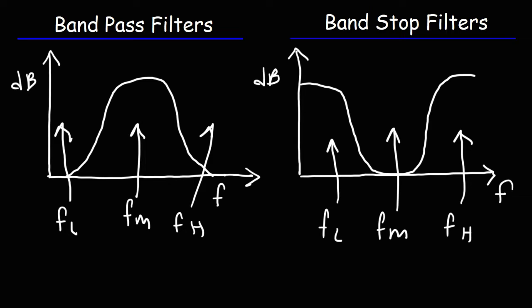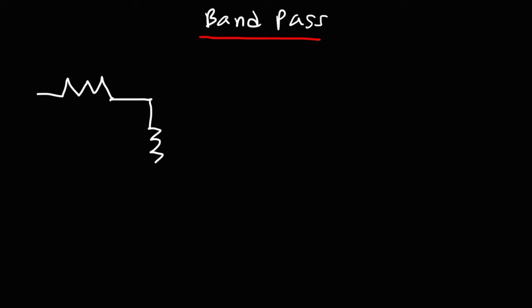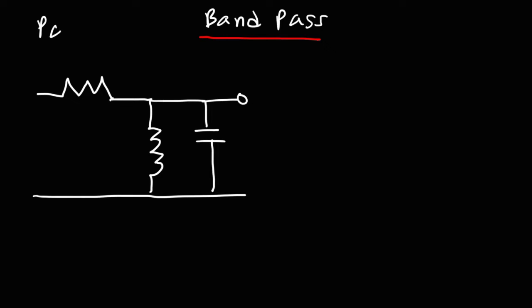Now let's talk about some circuits that would fit the description of these two types of filters. First, we're going to focus on the bandpass filter. There are two RLC circuits that can work as a bandpass filter. Here's one of them — we're going to have a resistor and an inductor that's parallel to a capacitor. This is a parallel RLC circuit, since the inductor and the capacitor are parallel to each other.